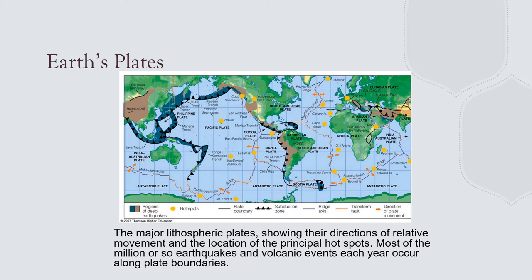The highest point on Earth, the Himalayas, are formed by continent-to-continent collision pushing the landmass up high — the Himalayas are actually growing. Iceland is a huge shield volcano where the mid-ocean ridge is above sea level. That's a little tour of Earth's spreading centers, subduction zones, mantle plumes, and plates.